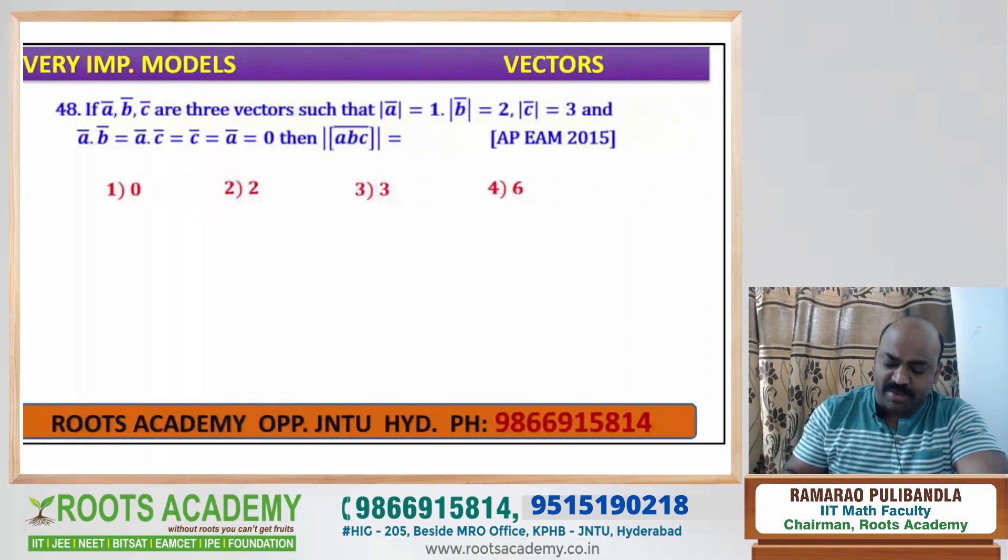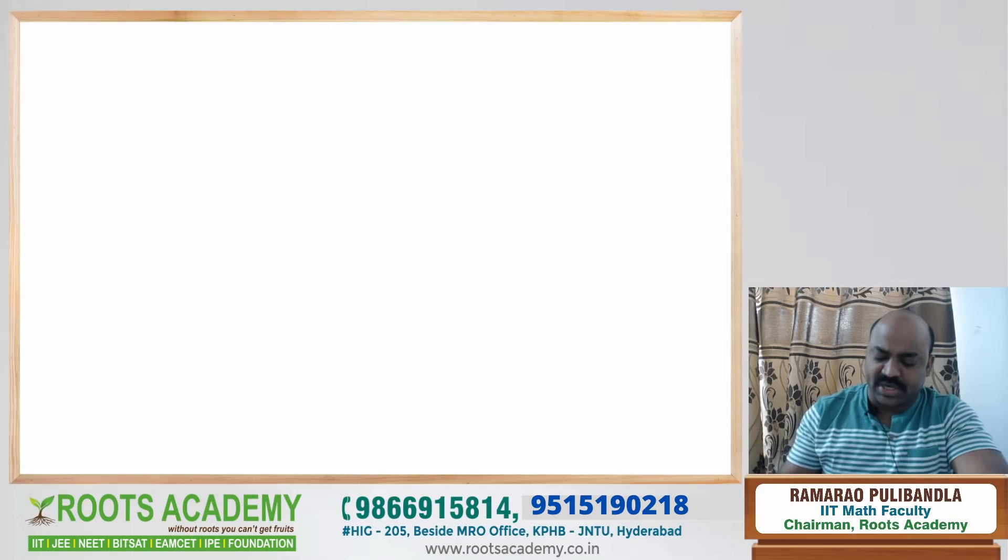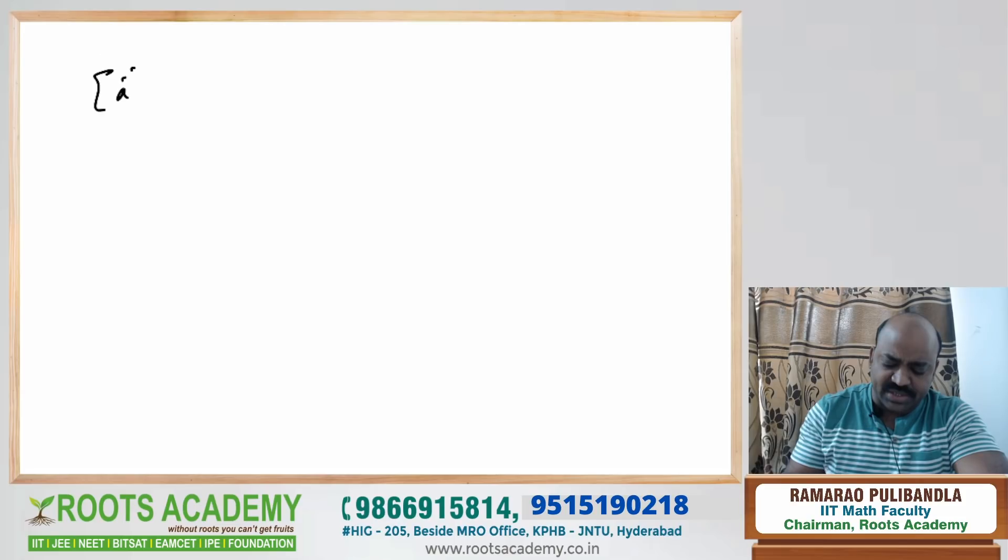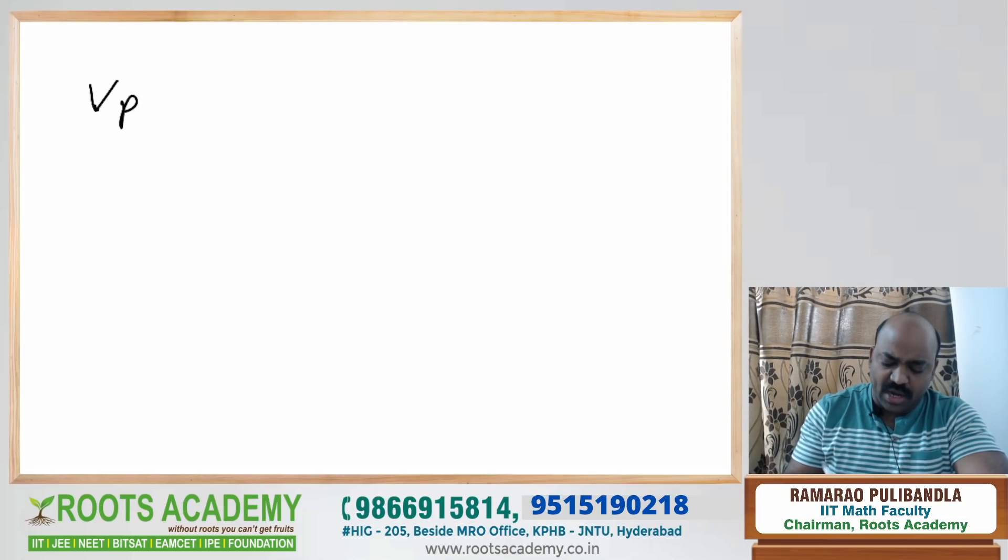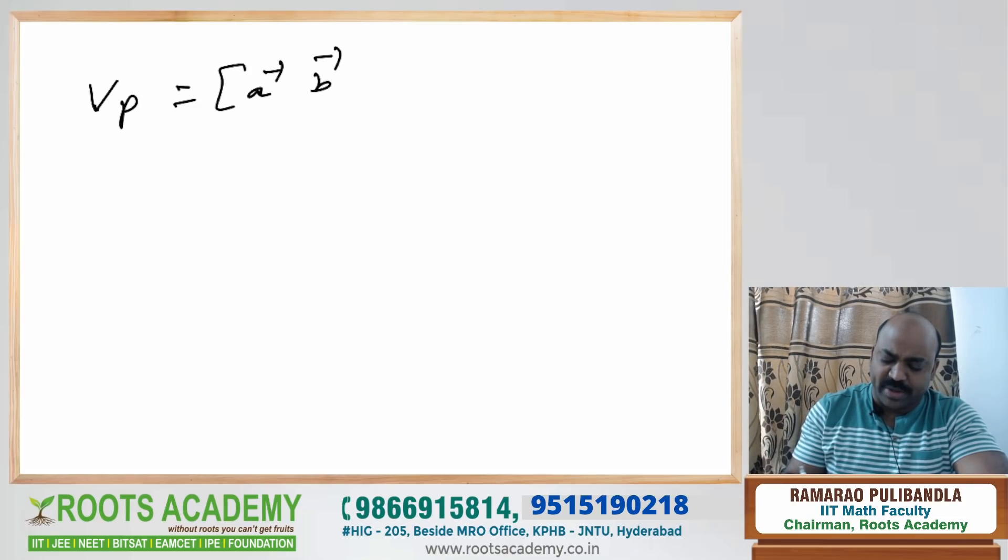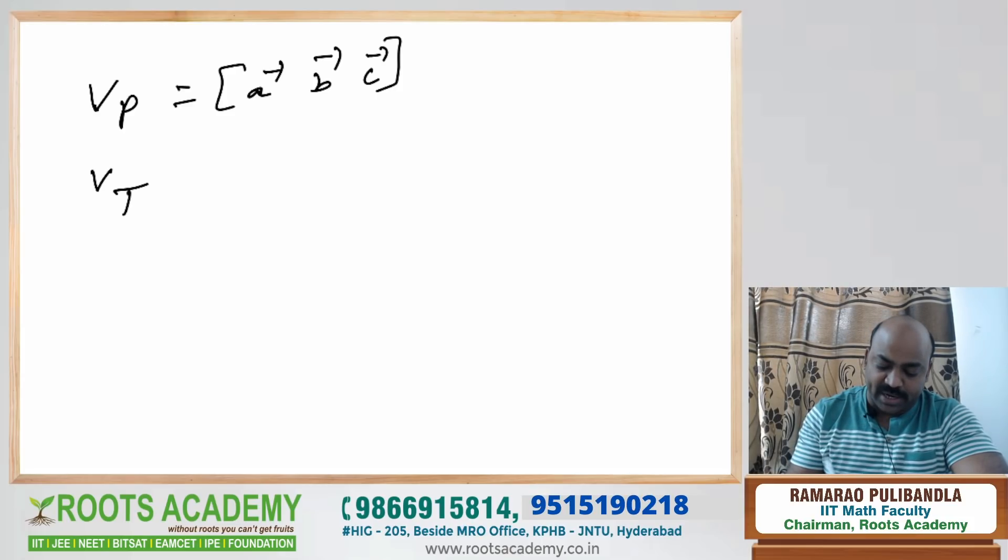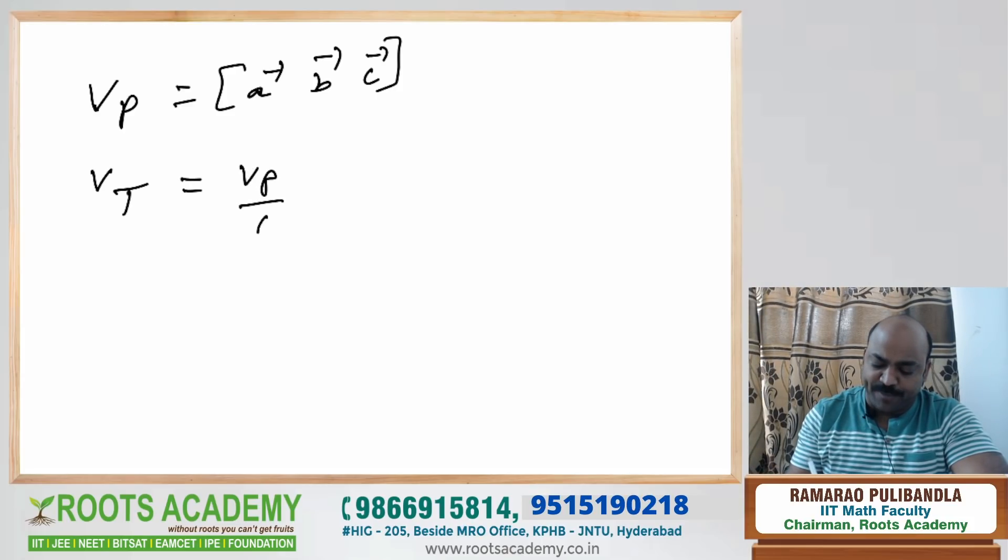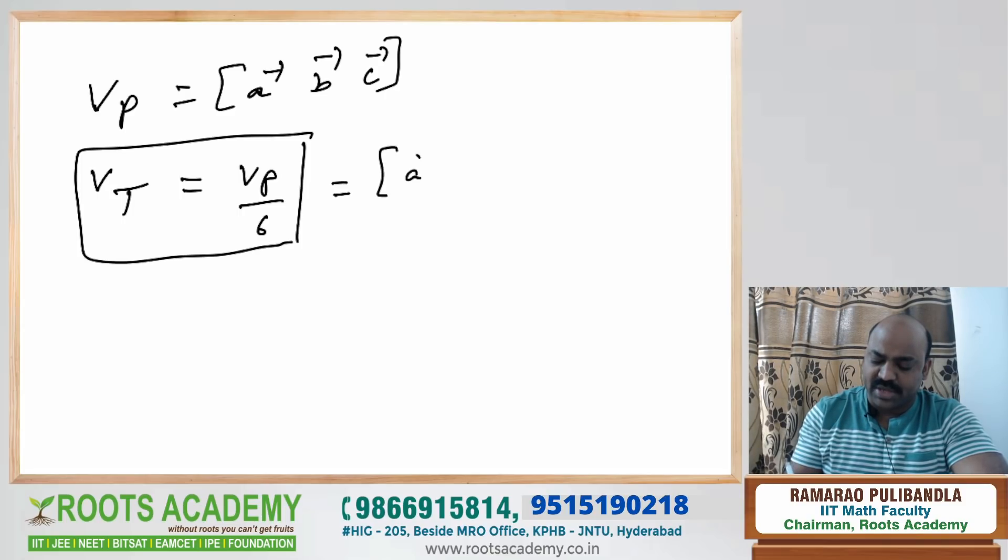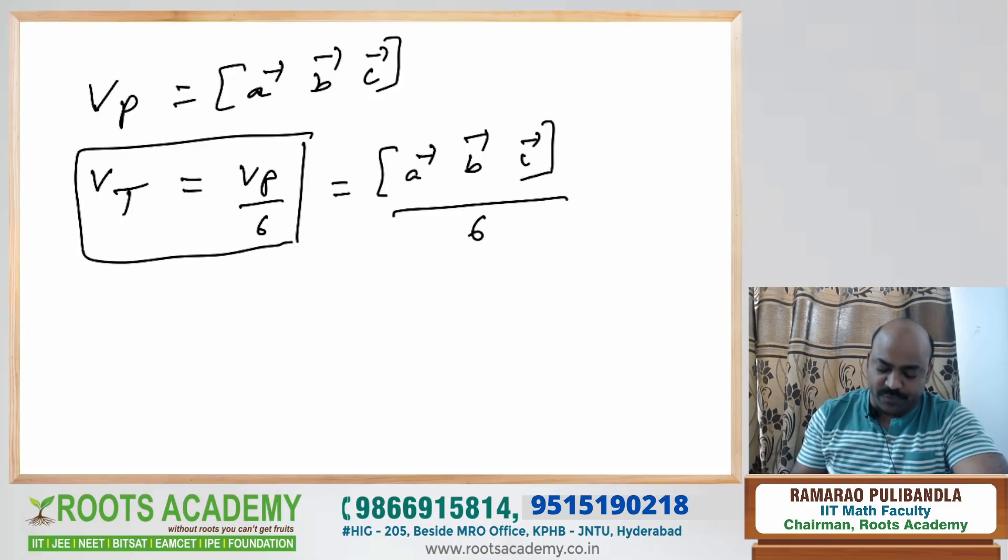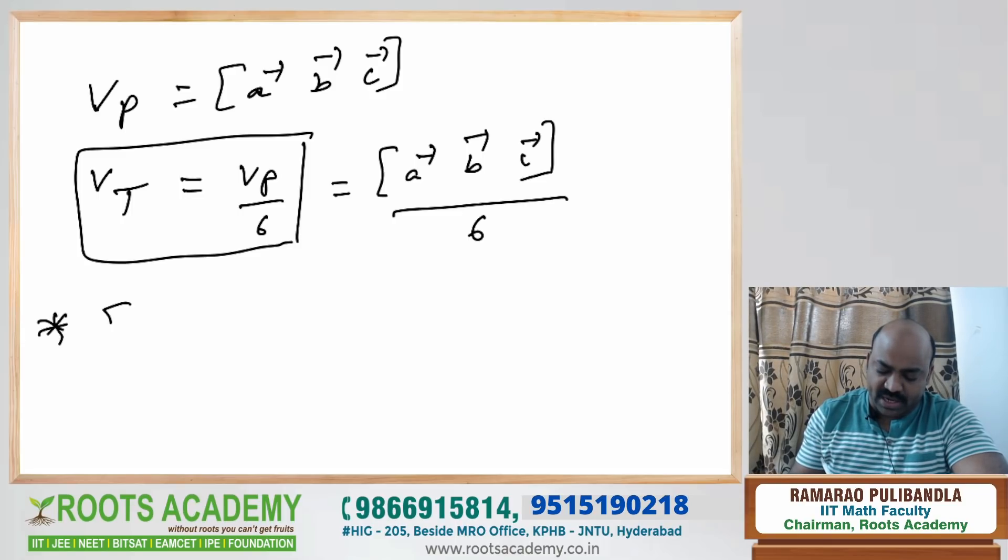Here in this box abc, we have beautiful, basically connected things. This box abc is nothing but volume of parallelepiped. If I want volume of tetrahedron, do you know what you will get? We will get volume of parallelepiped by six. That is nothing but box abc by six. Beautiful results.